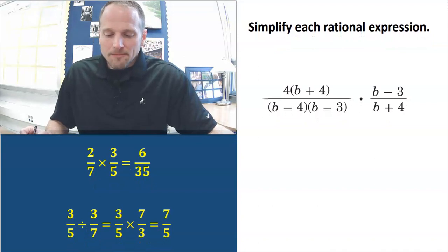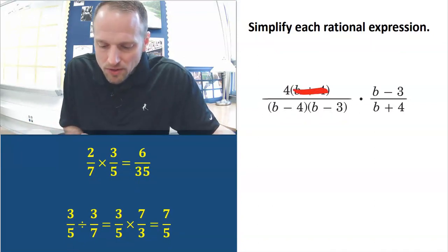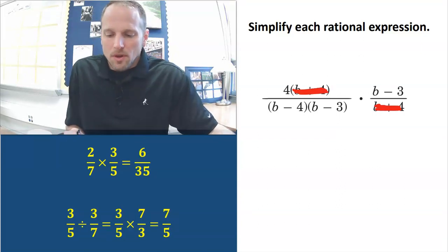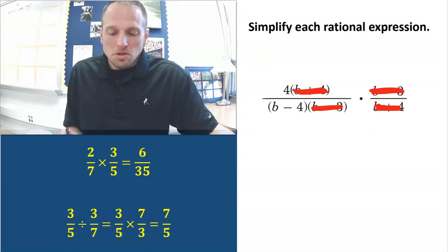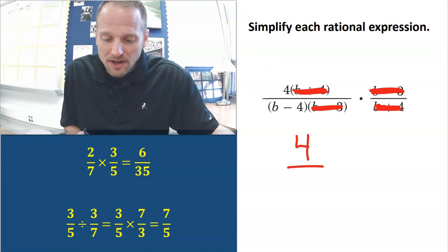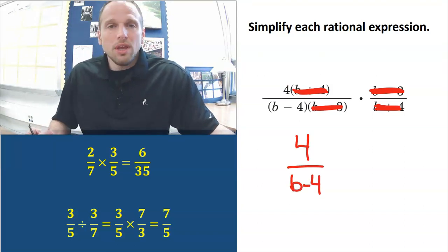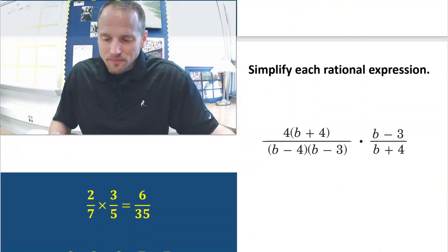Same thing here. Look what we have on the top and the bottom. We have a b plus 4 on the top and on the bottom. We have a b minus 3 on the top and on the bottom. So all we have left for our simplified expression is 4 over (b minus 4). Pretty sweet.